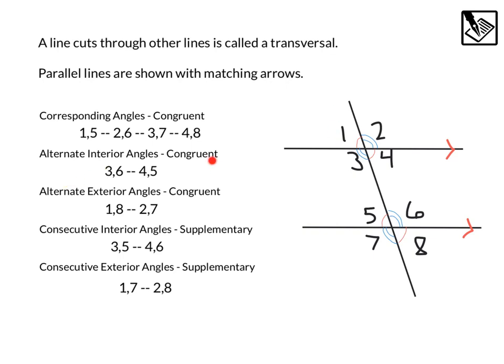Alternate interior angles are also congruent. These are alternating on the inside, 3 and 6, and 4 and 5. Each of those pairs are congruent.